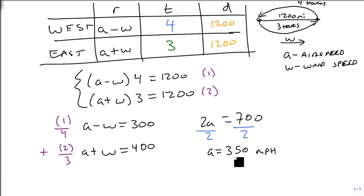Our wind speed, though, all we have to do is plug this in. I'm going to plug it into the second one, so we get 350 plus W equals 400. Subtract 350, so W is 50. So our wind is flying at 50 miles per hour.